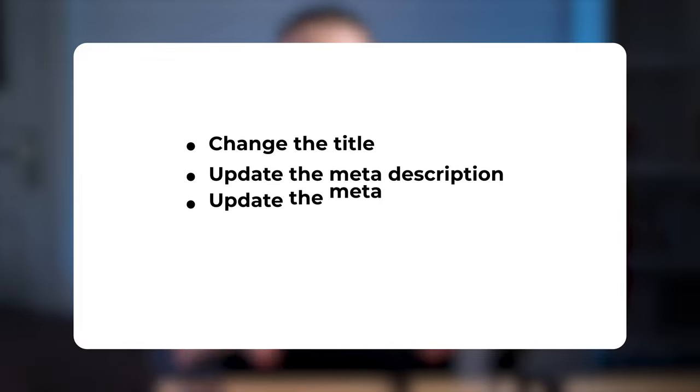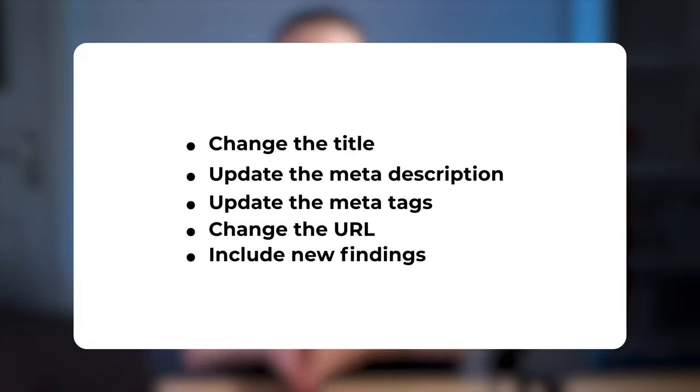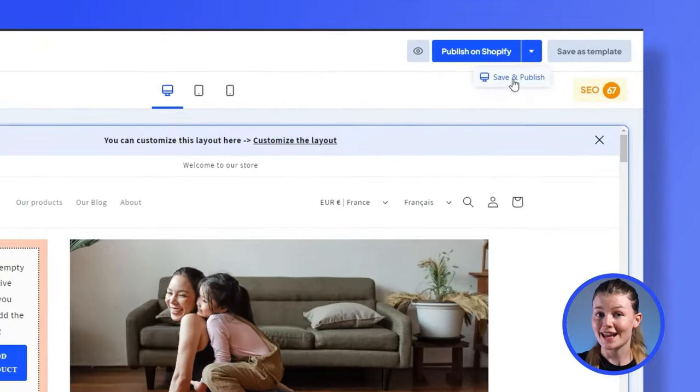Now I mentioned getting flagged on Google for duplicate content. This is when Google thinks you're trying to illegally get higher rankings by republishing the same content over and over again — and we don't want that. So we need to change a couple of things about this cloned article. You'll need to change the title, the meta description, the meta text, even the URL. Also try to include new findings so you can easily differentiate this duplicate content from the old one. Once you're done, just click save and publish to share your new article with your audience.